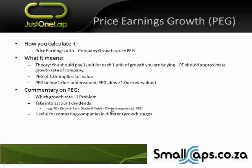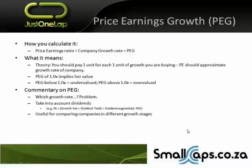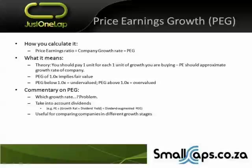There is another problem with the PEG ratio: it doesn't necessarily take into account dividends. Maybe a company has very high price earnings but pays a very healthy dividend, while another has very low price earnings but doesn't pay dividends at all. There's a way to address this — the dividend-augmented PEG ratio: price earnings divided by growth rate plus the dividend yield. I'm pointing out these weaknesses because understanding the problems tells you where the tool is most useful. In a nutshell, the PEG ratio is very useful and particularly good for comparing similar competing companies at different growth stages and life cycles, but beyond that you can encounter problems.